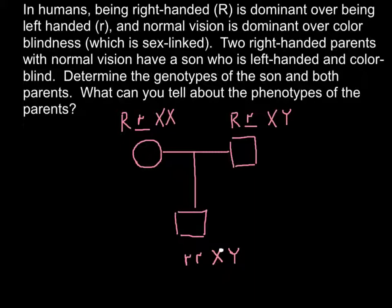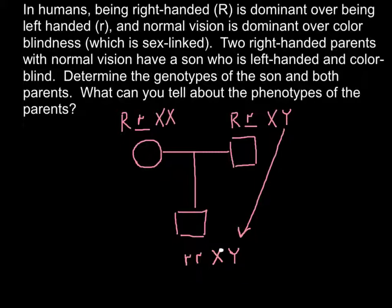The father can only give the son a Y chromosome — the mother doesn't have a Y chromosome. The father's gametes define the gender of the child; gametes can carry either an X chromosome or a Y chromosome. Because this couple has a male child, the child inherited the Y chromosome from his father and the defective X chromosome — the X chromosome with the defective gene — from his mother's side.